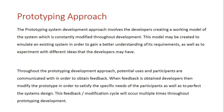Throughout this type of development approach, potential users and participants are communicated with in order to obtain feedback. The feedback obtained from these parties is then applied to the prototype, which is then modified once again in order to perfect the design and ensure that the participants are satisfied with what will eventually be the new information system. This feedback-modification cycle may occur multiple times throughout prototyping development.